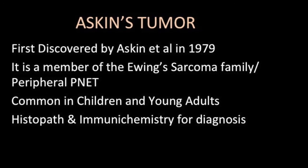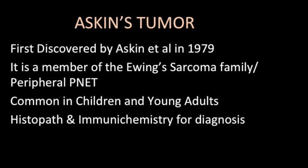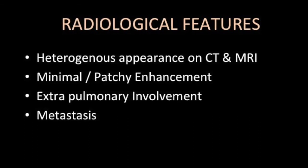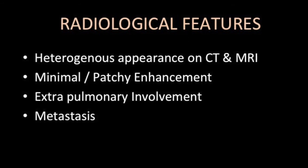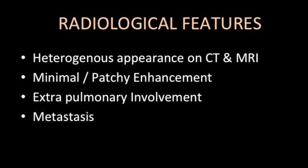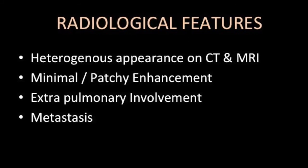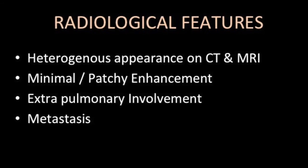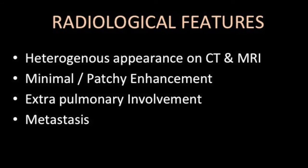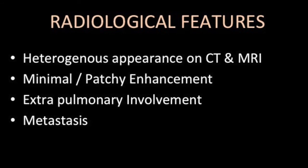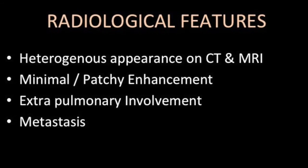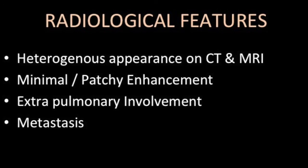The CT and MR findings — if MR is done in certain patients — are very variable. But what is common is that you see a very solid, dense mass. You might see areas of necrosis or hemorrhage if it becomes very large. Significantly, you see a lot of extra-pulmonary involvement, rib erosions, and muscle involvement. Not infrequently, you may also see pulmonary metastasis.